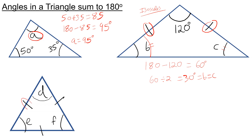Finally, we have an equilateral triangle because all three sides are the same. This means all of the angles inside are the same too. D, E, and F add up to 180 and are all equal, so to work out one of them I just divide 180 by 3, which is 60 degrees. So D, E, and F are all 60 degrees.